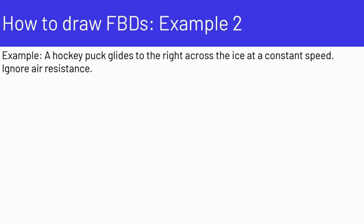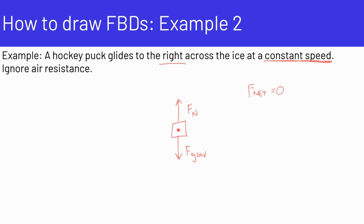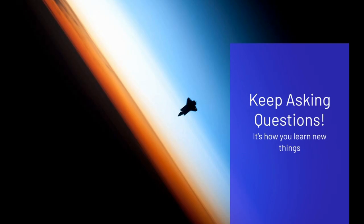In example two, we have a hockey puck gliding to the right across the ice at a constant speed. We're going to have gravity pulling down and the normal force pushing up, because the hockey puck is in contact with the ice. Because the hockey puck is moving at a constant speed, the net force equals zero. There's no force moving the hockey puck to the right — an object in motion stays in motion. So there are no other forces on the hockey puck besides gravity and the normal force. Keep asking questions — it's how you learn new things.